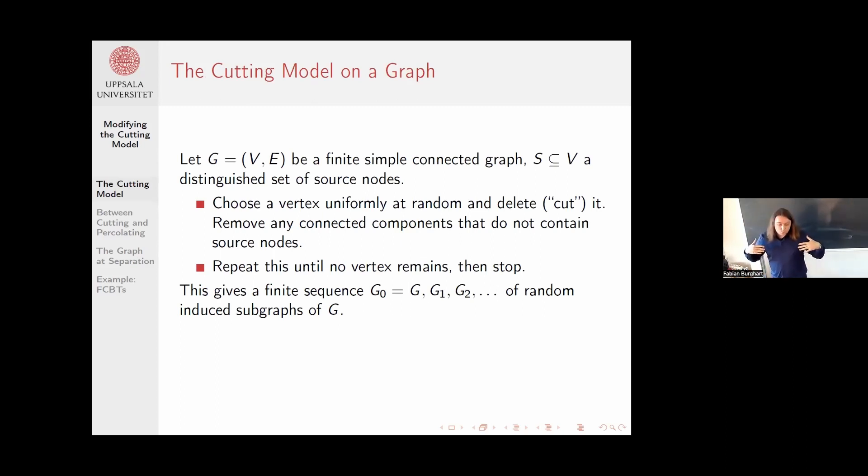This will potentially disconnect the graph. Then there might be some connected components that are not connected to source nodes. The idea is that anything that's not connected to a source dies off, so I remove it and continue with the remaining graph. I iterate this until no vertex remains, then I can't select another vertex.